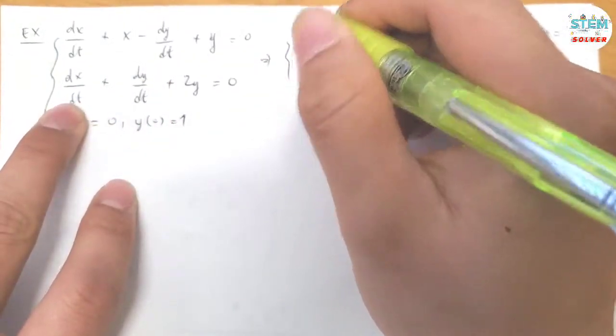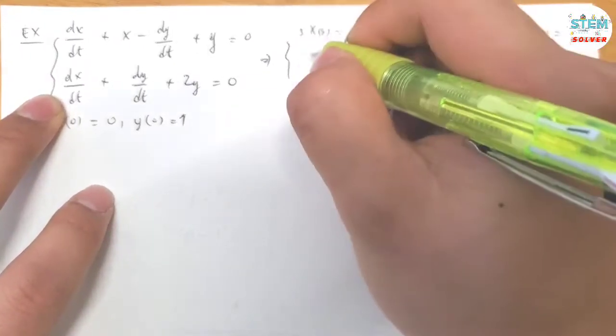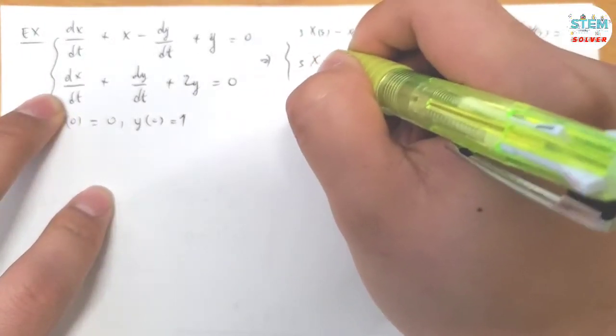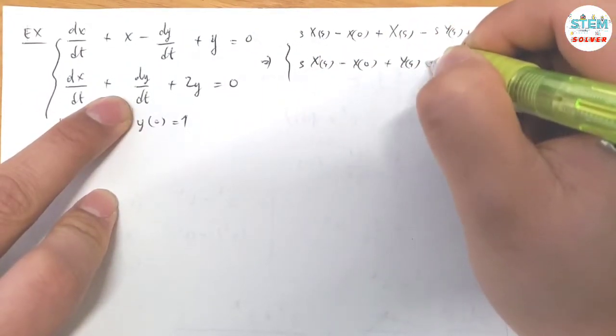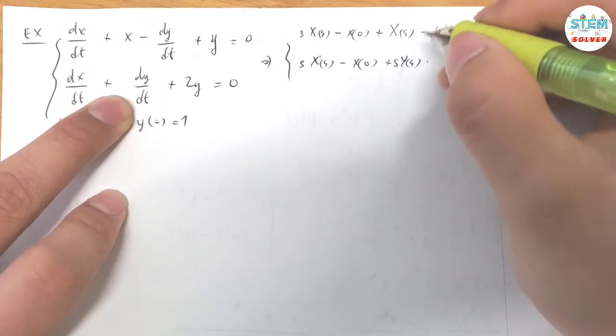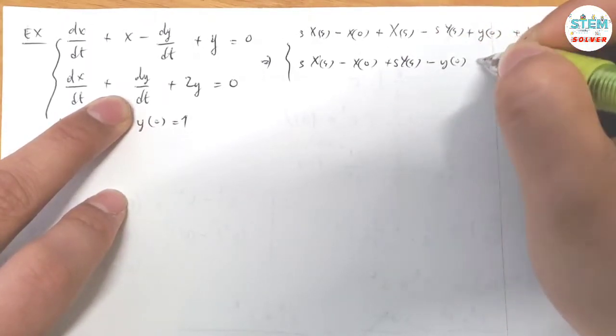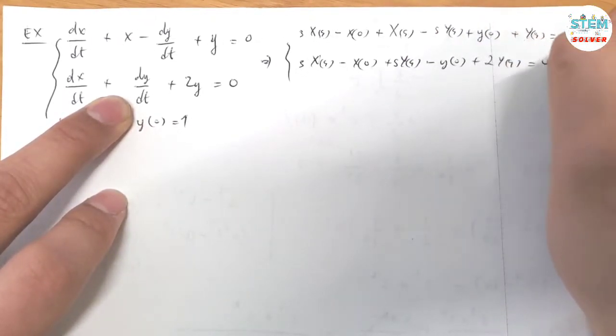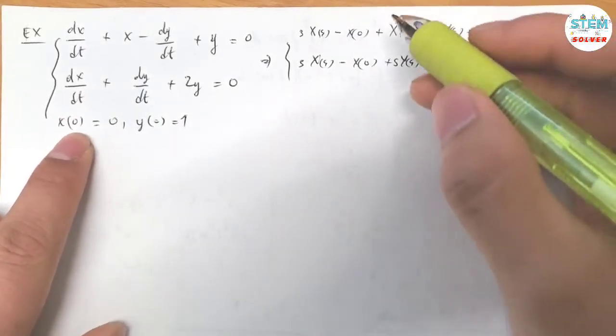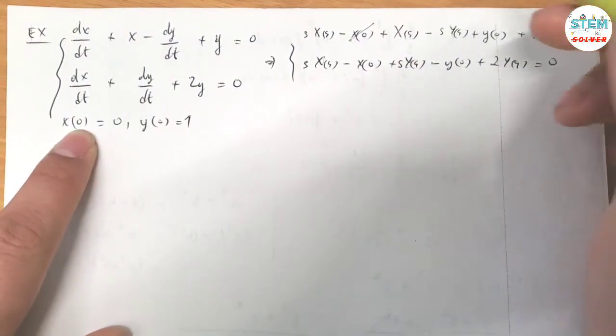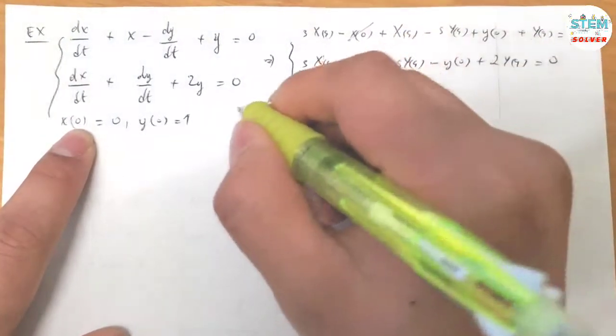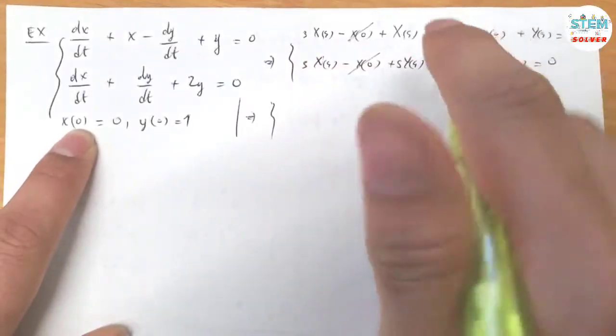Now for this one, apply the derivative theorem. I have S·X(s) minus X(0) plus Y(s), S·Y(s) minus Y(0) plus 2Y(s) equals 0. And also plug in the conditions X(0) equals 0, so that is gone. Simplify this a little bit.